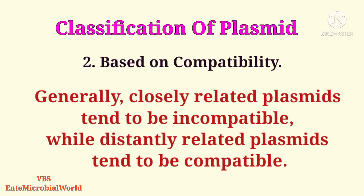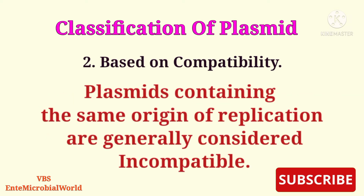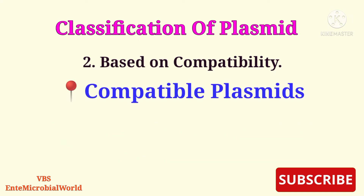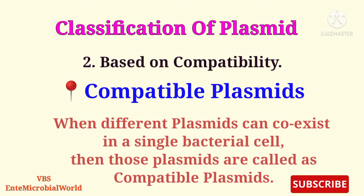Plasmids containing the same origin of replication are generally considered incompatible. Compatible plasmids are those having the ability to co-exist stably in the same cells — that is, when different plasmids can coexist in a single bacterial cell, those plasmids are called compatible plasmids.